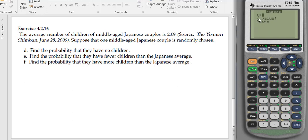We have to type in our lambda, which is the average number of successes, which is 2.09 in this case. And we want to know the probability of getting zero successes.